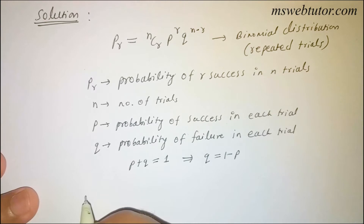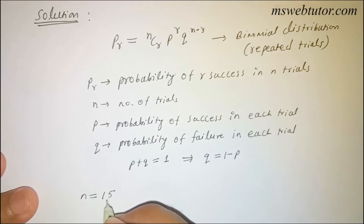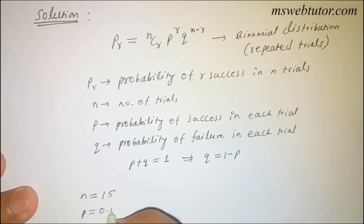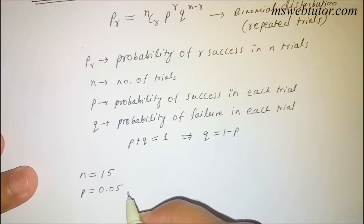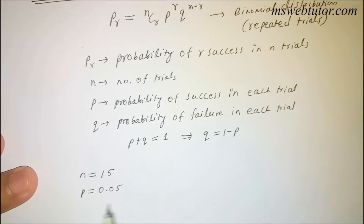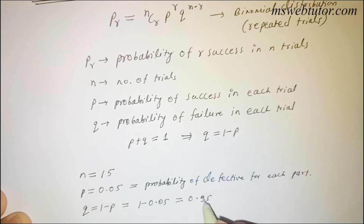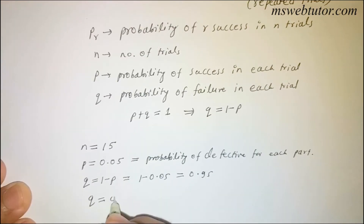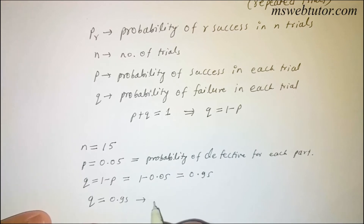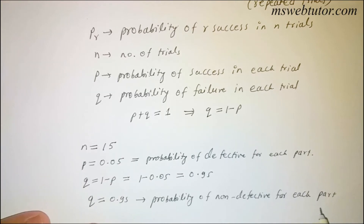In this question, 15 parts are selected randomly, so n = 15. The probability that each part will be defective is p = 0.05. Therefore, q = 1 − p = 1 − 0.05 = 0.95. So Q is 0.95. P is the probability of defective for each part and Q is the probability of non-defective for each part.